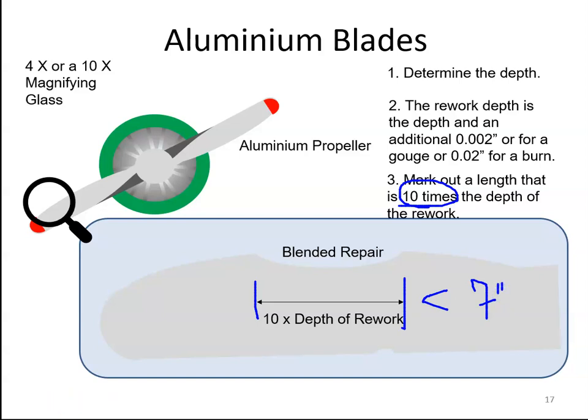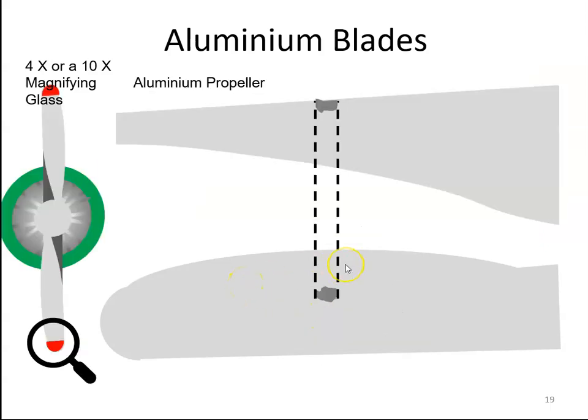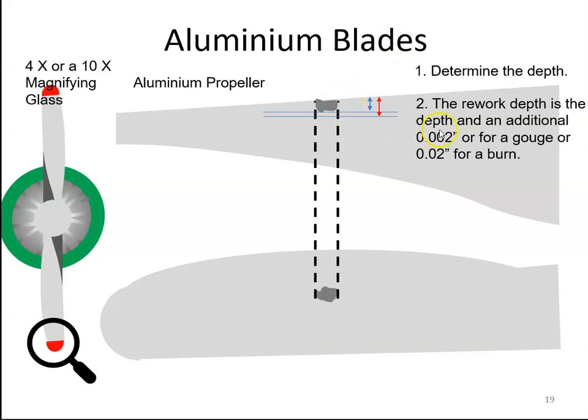If we go to the blade face or the blade back, we can also perform some repairs. Repairs to the face and back of the blade are performed with a spoon-like rifle file, and that is used to dish out the damaged area. In this case, we again determine the rework depth. So we take that measurement and we add on the two thousandths of an inch or the two hundredths of an inch if it's a burn.